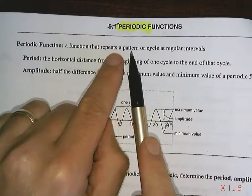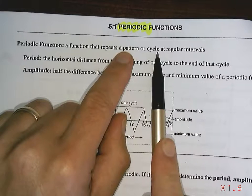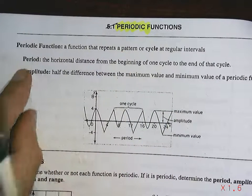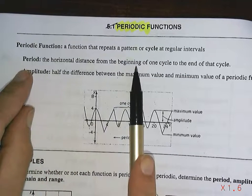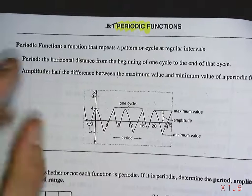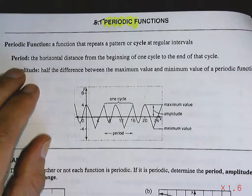A pattern or a cycle mean the same thing and they can be used interchangeably, and it needs to occur at regular intervals. Period. That's going to be defined as the horizontal distance from the beginning of one cycle to the end of the cycle.